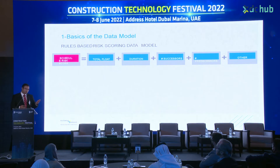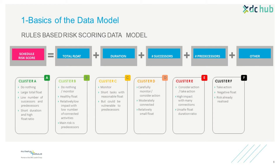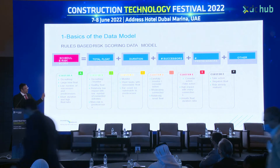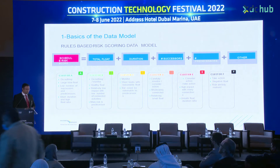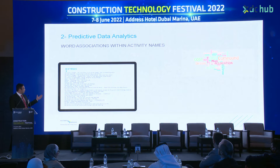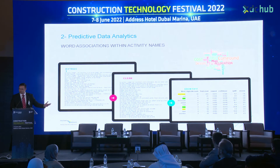If you want to group activities in a certain way, we can look at Cluster A - which means do nothing, we have plenty of float and don't need to worry - through to Cluster F, which means we have negative float, which we all know is a bad thing for our end dates. Looking at schedules, we have all activity names. We can extract those names, clean them, group them, and start reading those properties to give us a better indication of what's happening in the schedule and how we can predict.